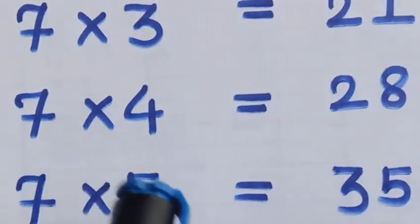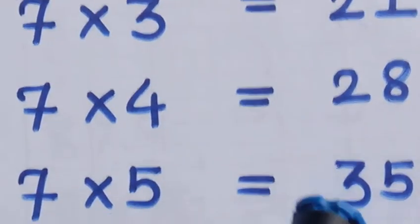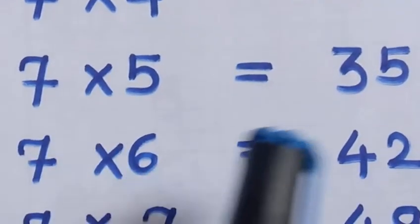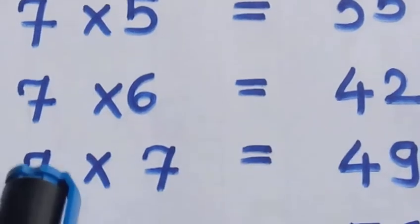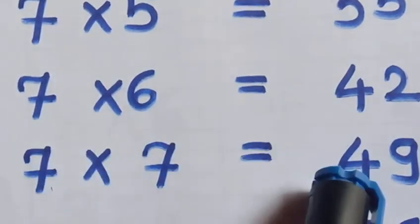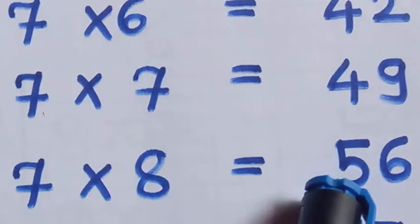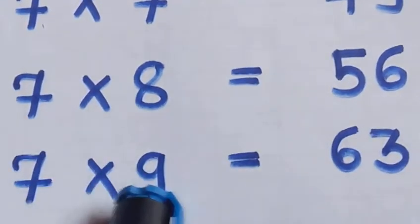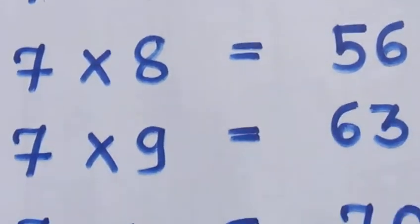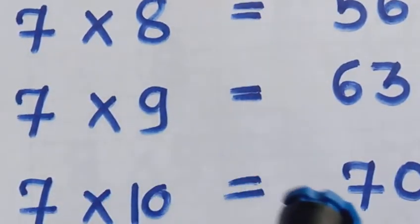7 5's are 35, 7 6's are 42, 7 7's are 49, 7 8's are 56, 7 9's are 63, 7 10's are 70.